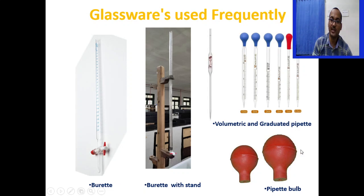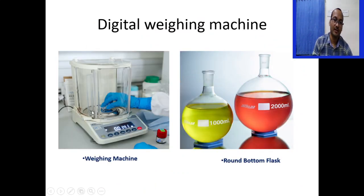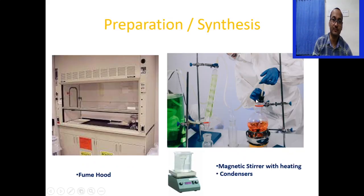The digital weighing machine is used to take the exact weight of different chemicals. The round bottom flask is used to carry out different reactions. During preparation or synthesis, you will mostly use a fume hood with different regulators for air, oxygen, and nitrogen. This is essentially a small lab where you can carry out all your reactions safely. The magnetic stirrer with heating system and condenser are also needed for preparation or synthesis.